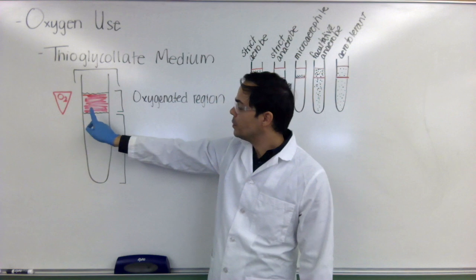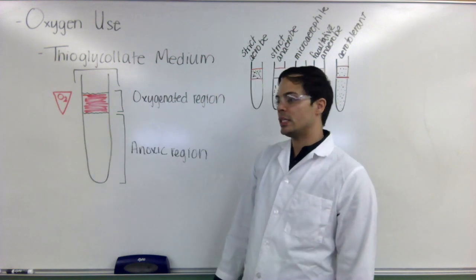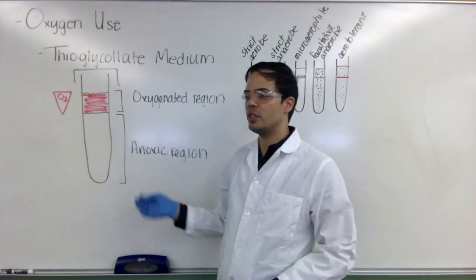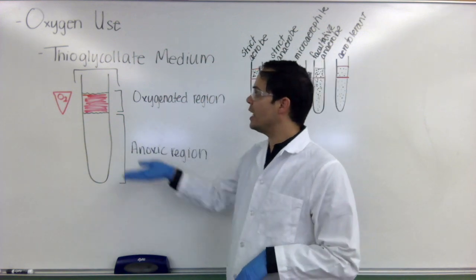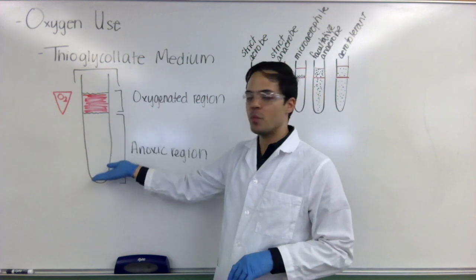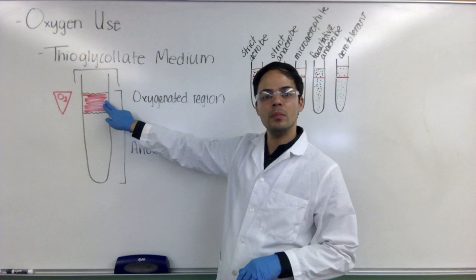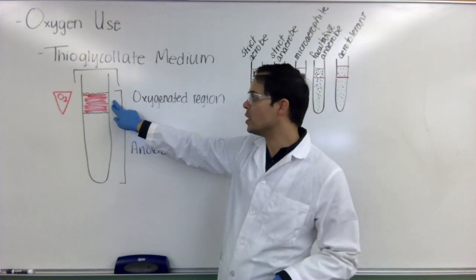And so also in this tube is a little bit of agar, not enough agar to cause it to solidify, but just enough to make it a little goopy and that actually prevents the oxygen from reaching all the way to the bottom which we can determine by adding our resazurin dye which is already in the medium.